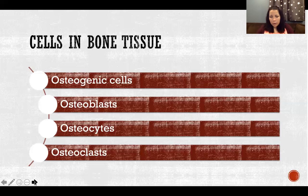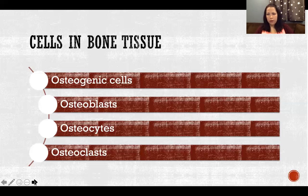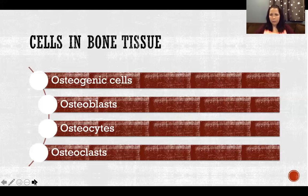If we break a bone, osteoclasts are there to clean up the old debris and make room so osteoblasts can build new bone. But we want to keep them on pace with each other — if osteoclasts are breaking down bone faster than osteoblasts are building it, we have a bone density problem. That's where conditions like osteoporosis arise, where we're losing bone tissue because the osteoclasts are going too fast.